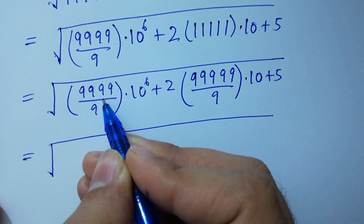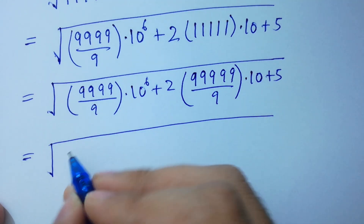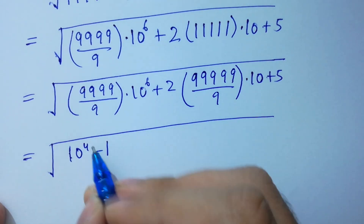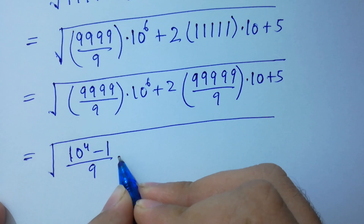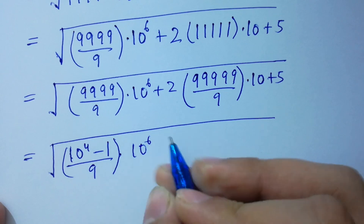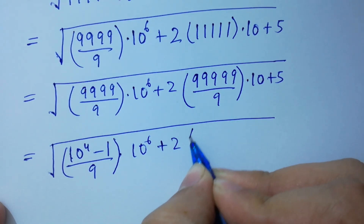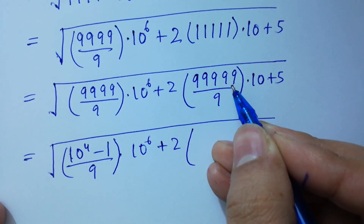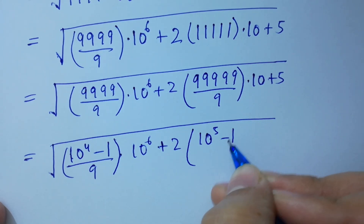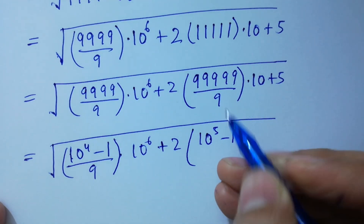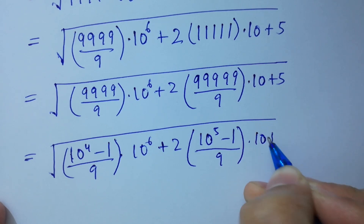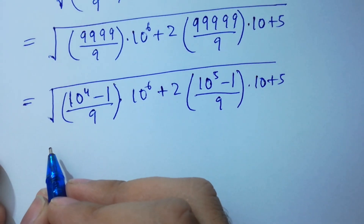Four times nine is the same as ten to the power four minus one, over nine as it is, times ten to the power six, plus two. It is five times nine, so here ten to the power five minus one, which is equal to 45 times nine over nine as it is, times ten, plus five. Next.